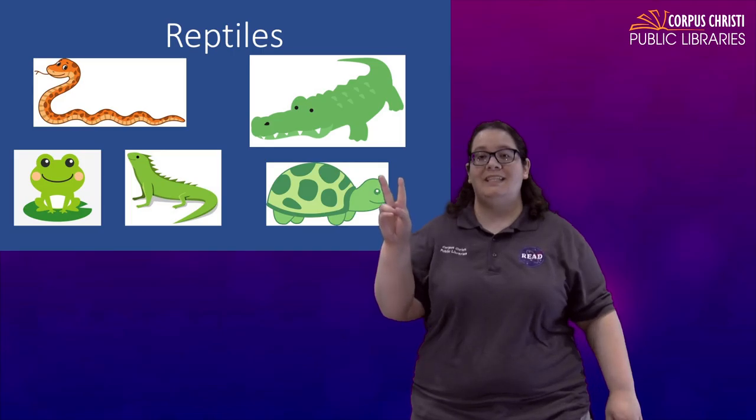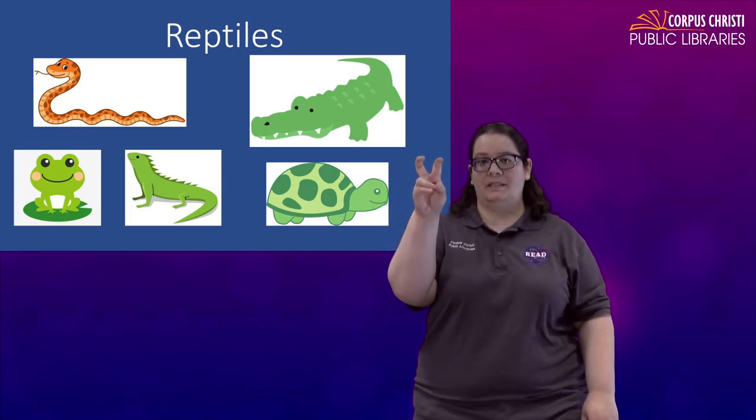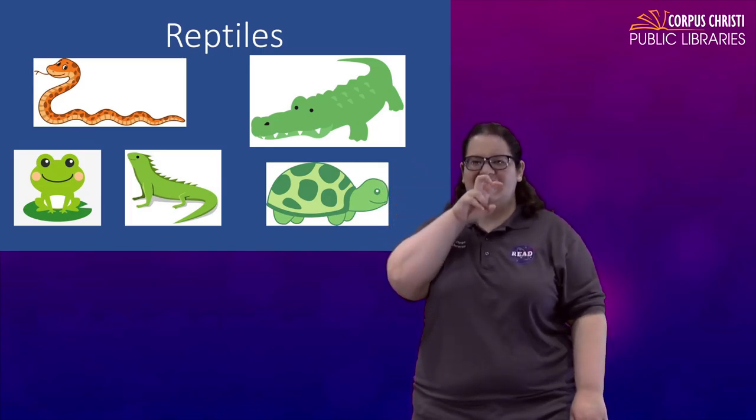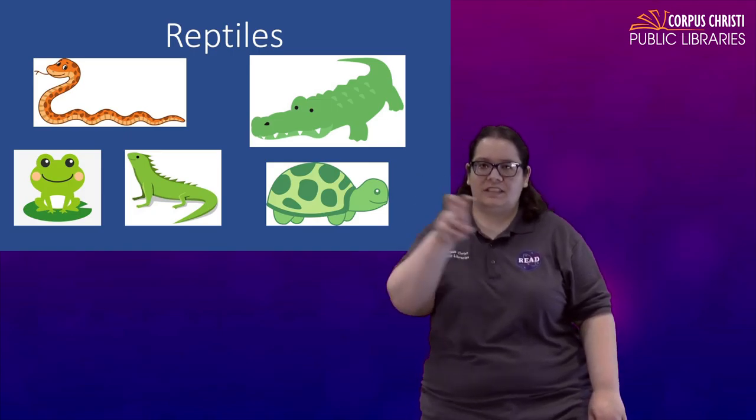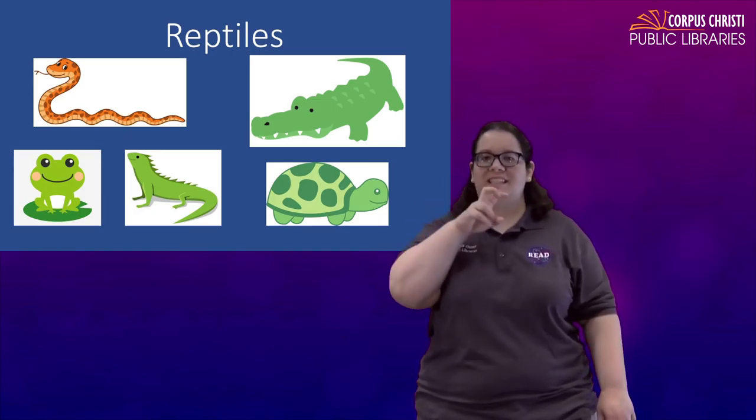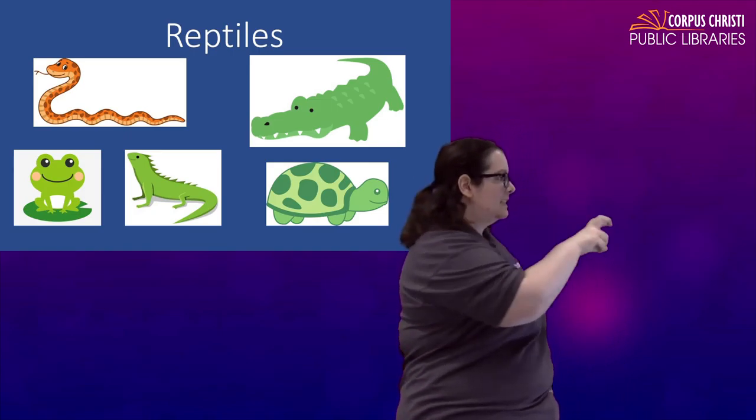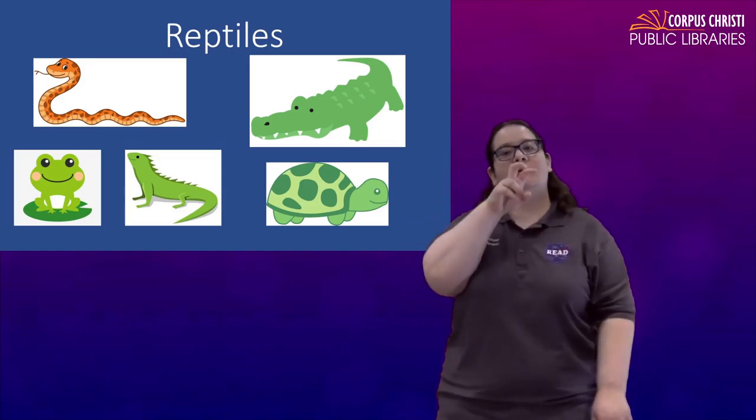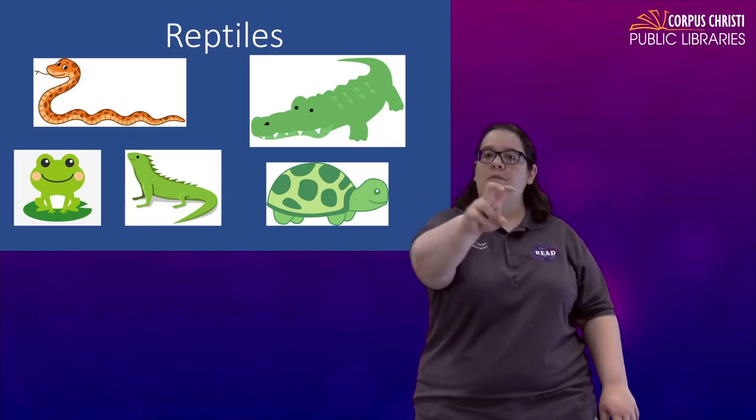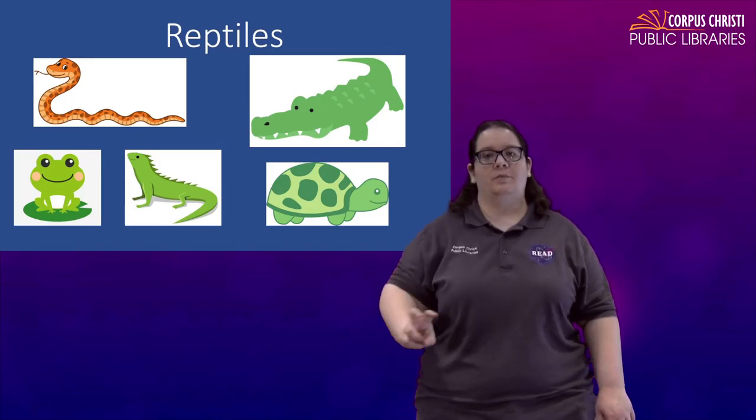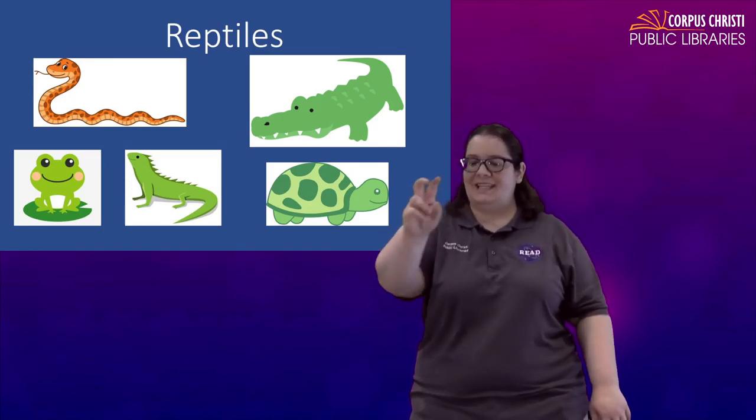Our first one that we have is snake. So you're going to bend a v kind of like a snake's fangs and then you're just going to slither it forward like a snake. Snake. Some people might start from their mouths and go out. Some people might just start down at their waist and go out. Either way, snake.